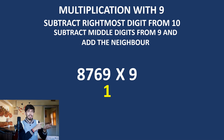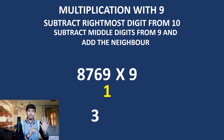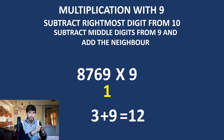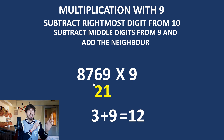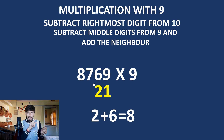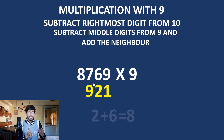For the middle digits, subtract from 9 and add the neighbor. So for 6: 9 minus 6 is 3 — when you see 6, you say 3. Then 3 plus 9 (because 9 is the neighbor) is 12, so write 2 with a carry dot. For 7: 9 minus 7 is 2, plus 6 is 8, and with the carry that's 9. You go on like this.